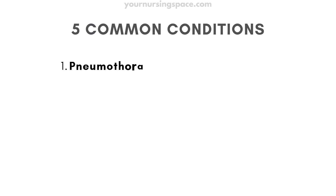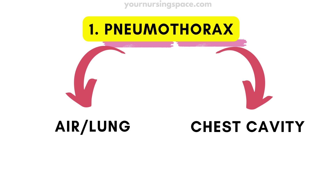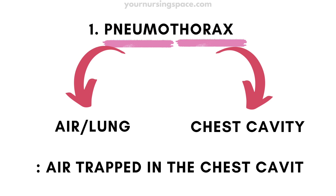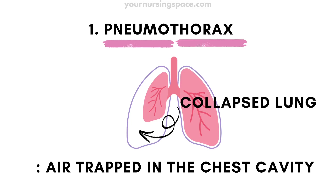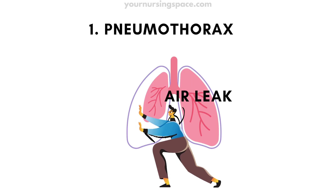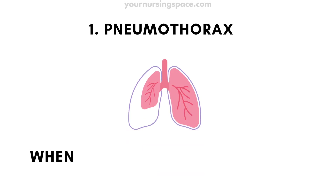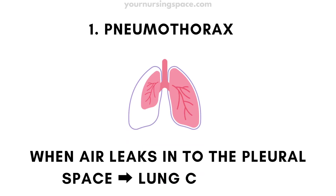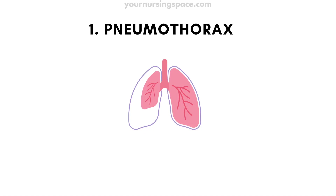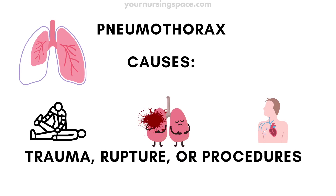Why do we use it? Here are the five most common conditions that require chest tubes. Number one: pneumothorax. Pneumo means air or lungs; thorax refers to the chest cavity. So pneumothorax literally means air trapped in the chest cavity, causing the lung to collapse. Think of a popped balloon — when air leaks into the pleural space, it pushes against the lung, making it collapse. This can happen from trauma, spontaneous rupture, or even procedures like central line placement.